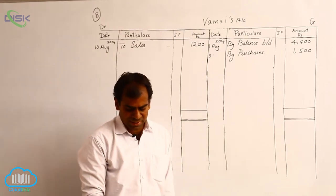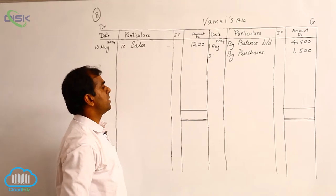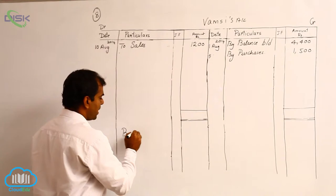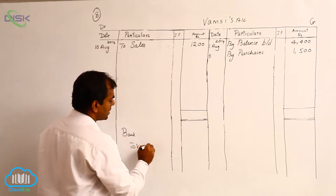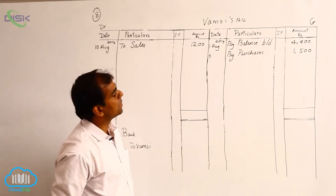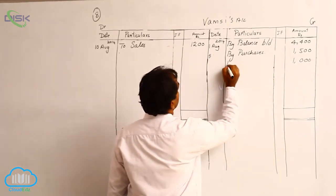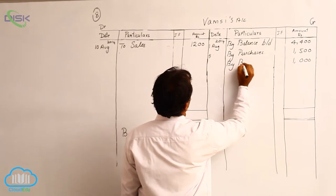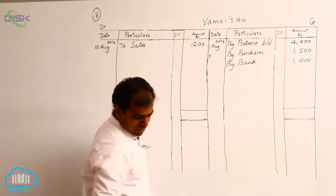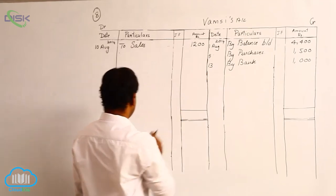On 13th, it states that we received a check from Vamsi. Check means bank. So our entry would be bank account debit to Vamsi's account, because Vamsi is the giver — we have to credit him. On the credit side, we enter the amount of 1,000 received as a check from Vamsi. The reason being bank. This transaction was on 13th.